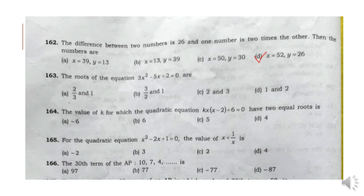Question 163: The roots of the equation 3x squared minus 5x plus 2 is equal to 0 are 2 by 3 and 1.